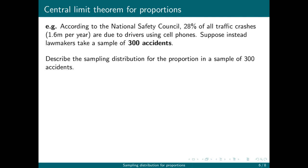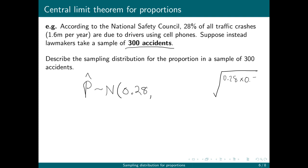Next, we're going to look at the sampling distribution for a sample of 300 accidents. Since we're taking more accidents in our sample, we would expect the standard error to go down — our sample proportions are going to get closer to the true proportion. So P-hat is again normally distributed with a center of 0.28. What changes is the standard error: the square root of (0.28 times 0.72) divided by 300 instead of 200, which turns out to be 0.0259.